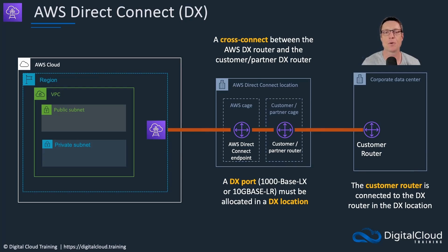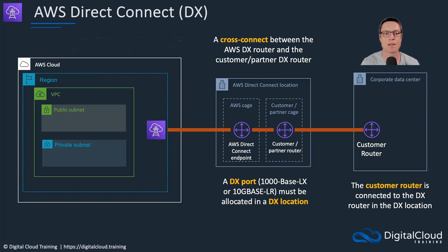You'll likely need a managed service provider to create that connectivity. Once you have the cross connect between the two cages in the DX location and the private connection from the data center into that DX location, AWS takes care of establishing the remaining configuration through to the actual VPC itself.